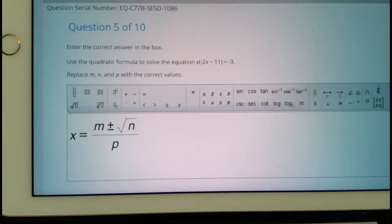Use the quadratic formula to solve the equation x times the quantity of negative 2x minus 11 equals negative 3.